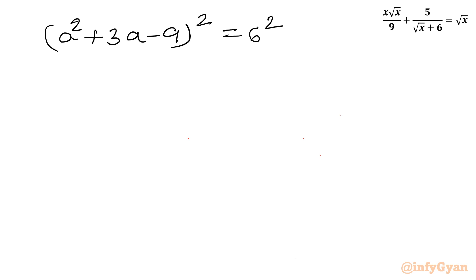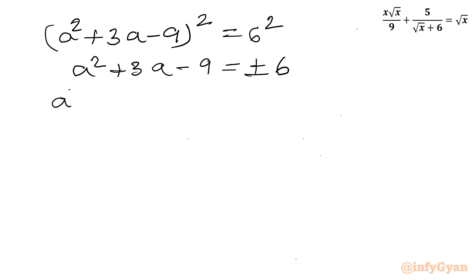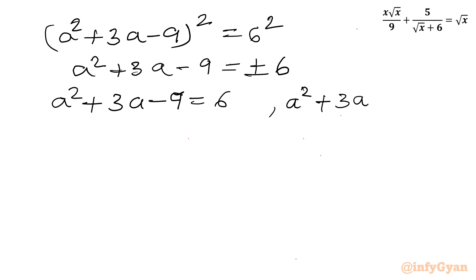Let's take square roots of both sides. So a² plus 3a minus 9 equal to plus or minus 6. So I can frame two equations: a² plus 3a minus 9 equal to plus 6, and a² plus 3a minus 9 equal to minus 6.